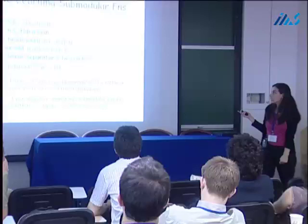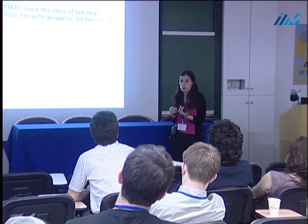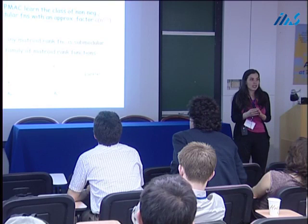This is our most general upper bound. We also show a really surprising lower bound: no algorithm can PMAC learn the class of non-negative monotone submodular functions with an approximation factor better than N to the one-third. The details of the construction are somewhat complicated, so I'm going to present only the main ideas.